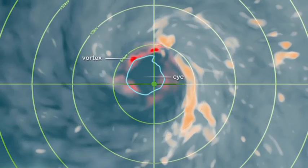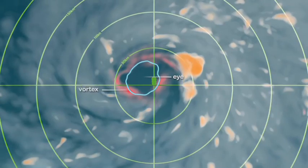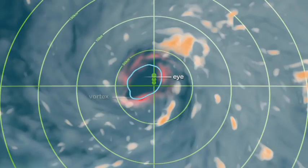Vortices can also pump high-energy air from the eye into the eyewall, boosting the strength of the updrafts and intensifying the hurricane.